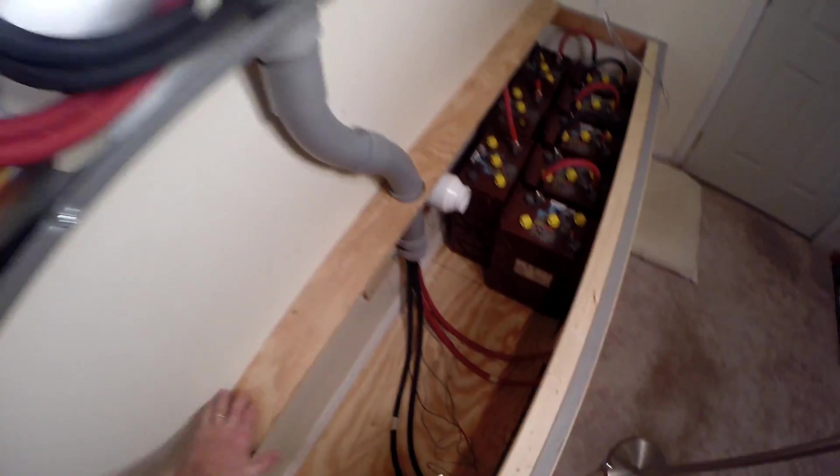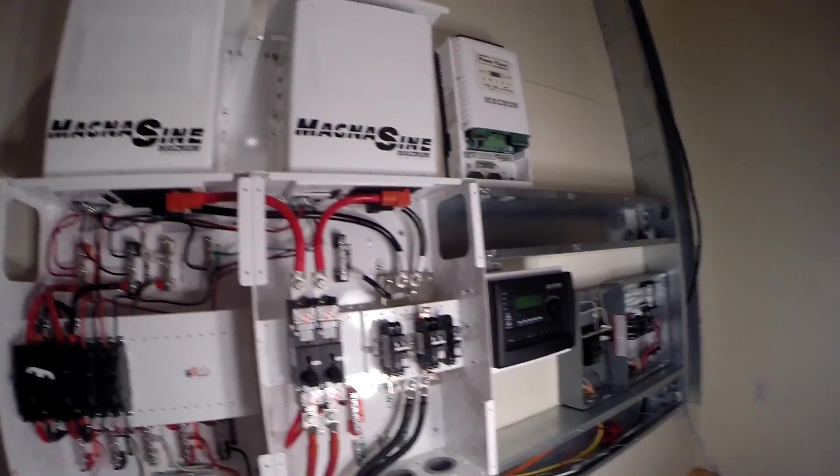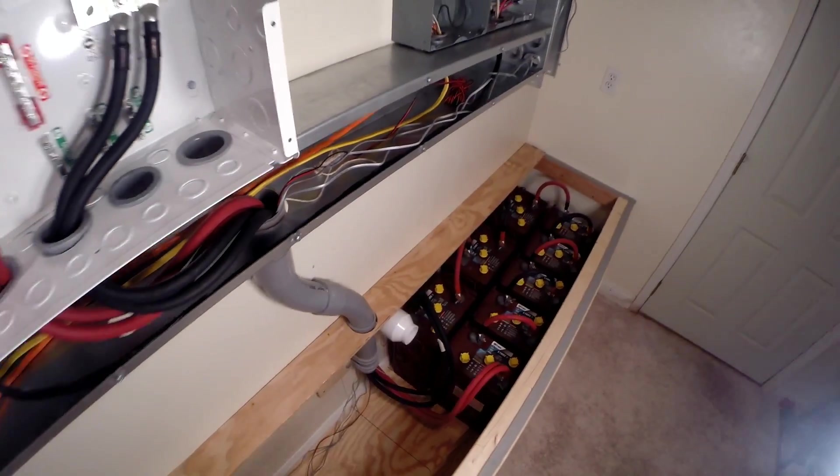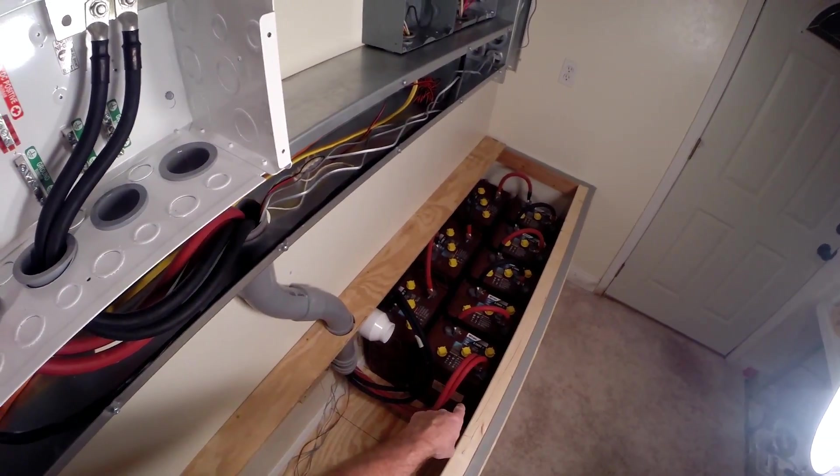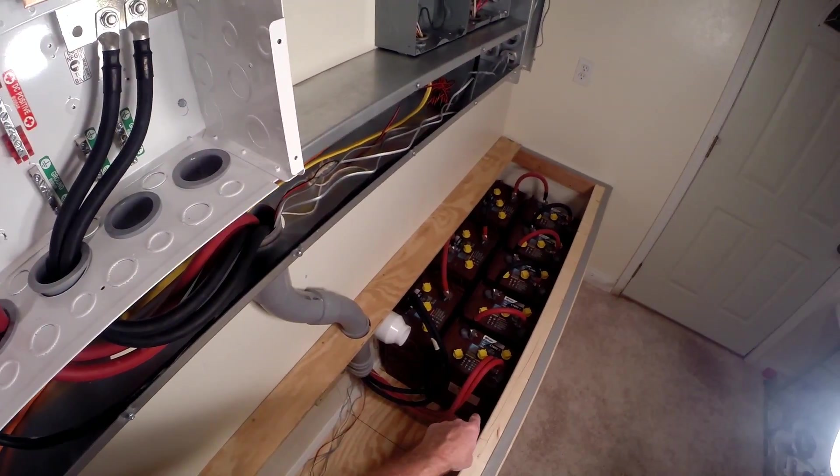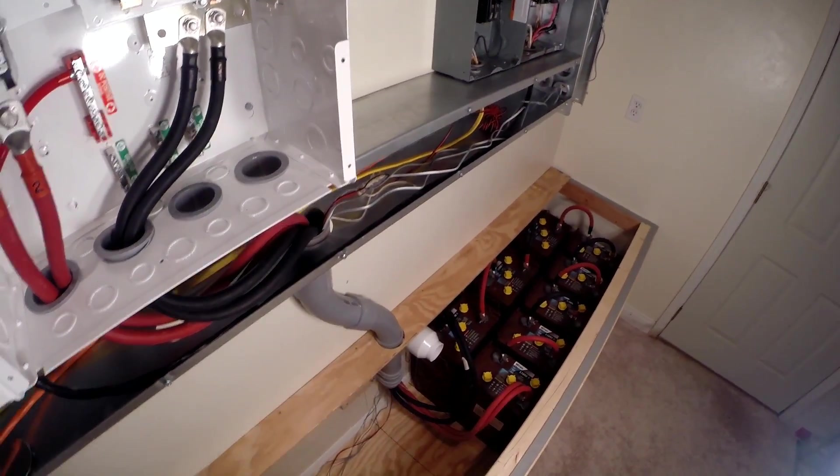Here we are - all the main power is connected to the 48 volt battery bank. You got two four gauge positive, two four gauge negative, come up through here in the conduit and into the Magnum panel.